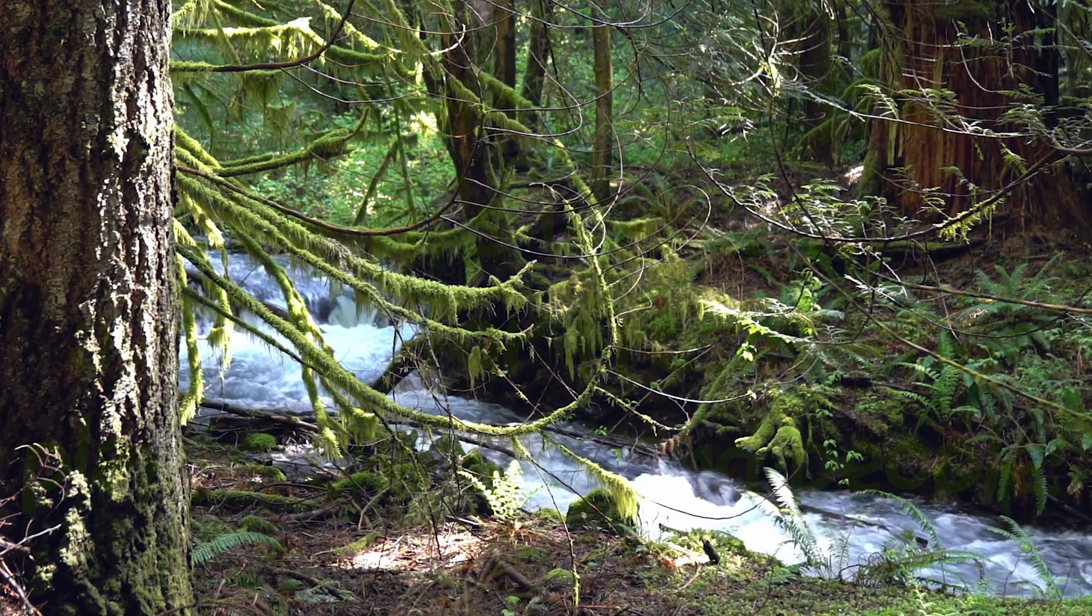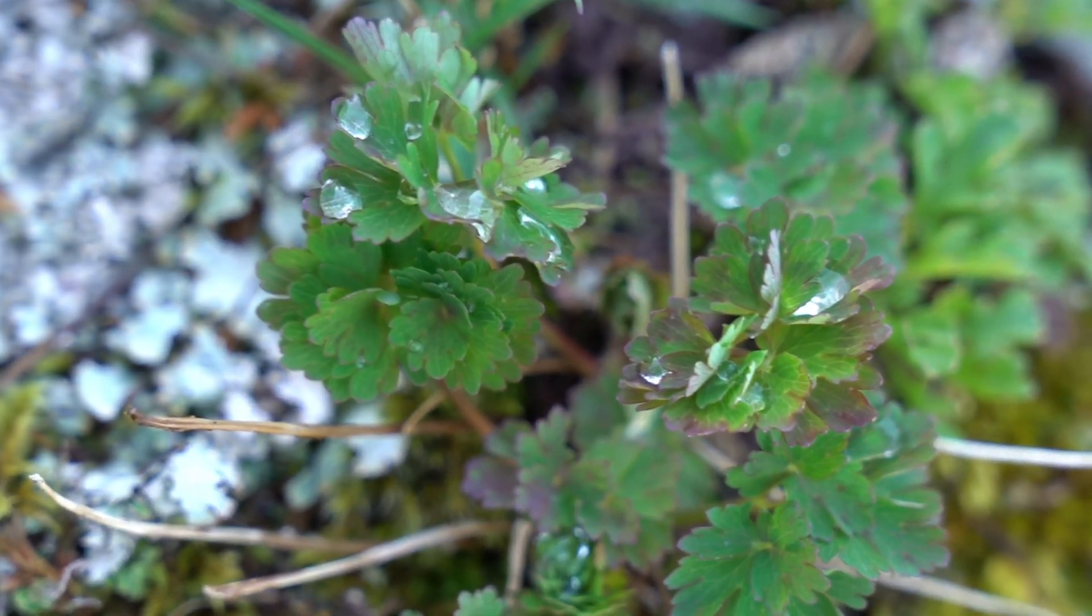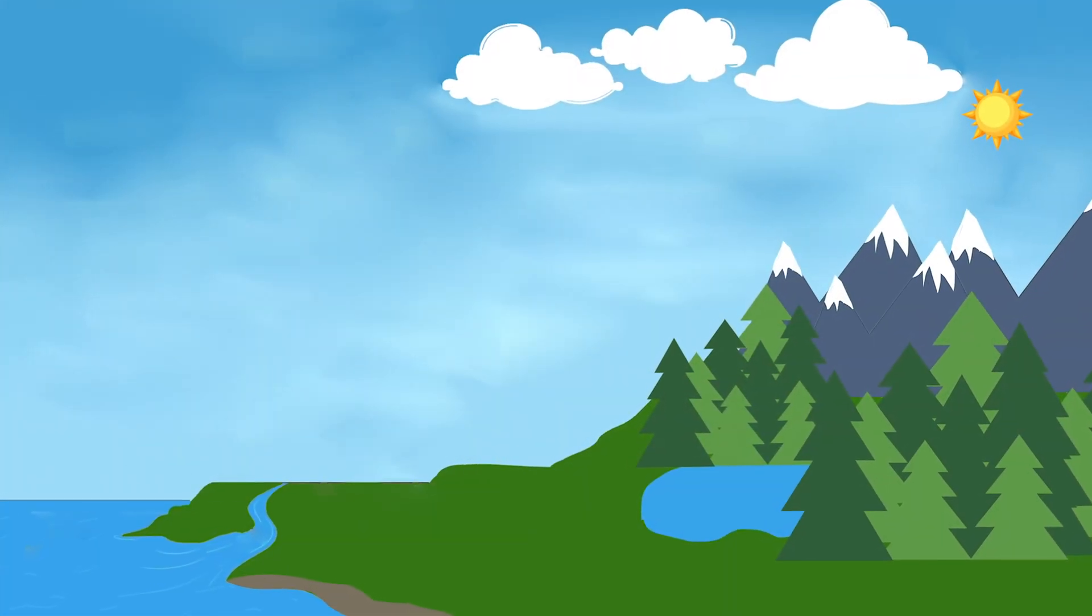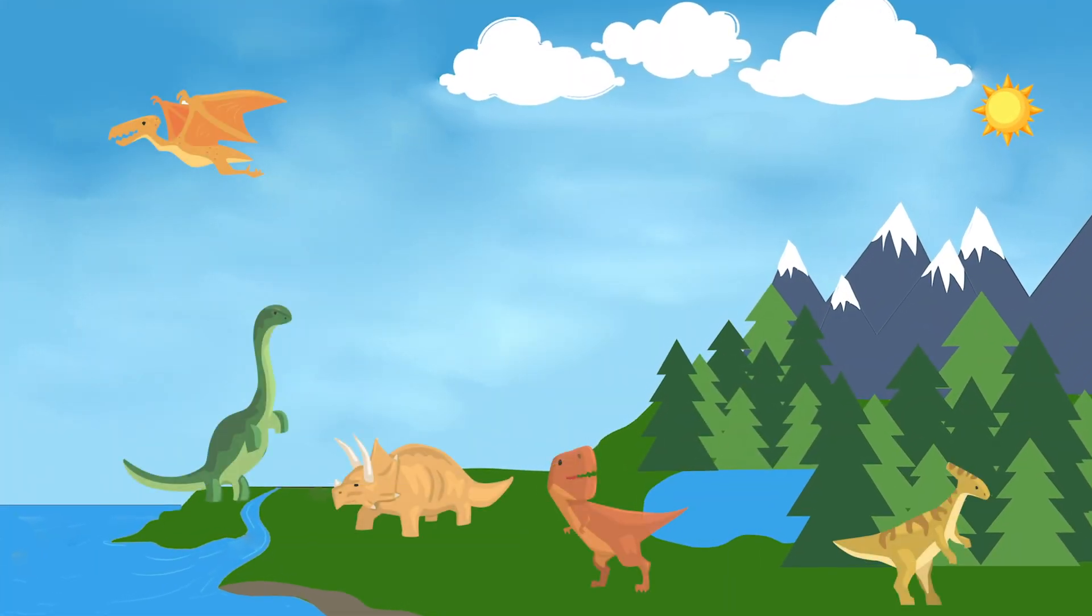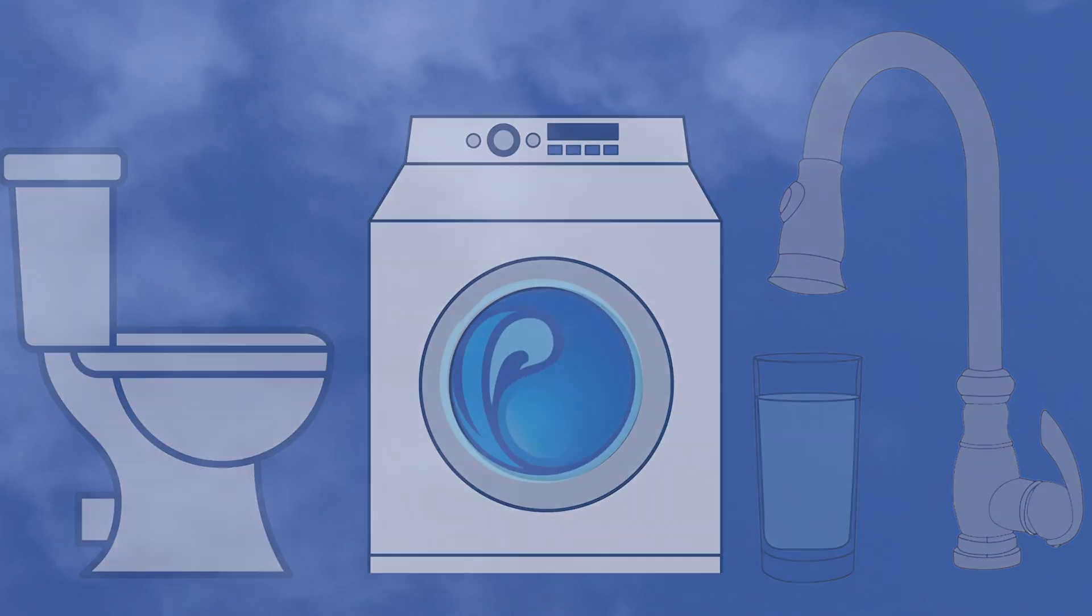To complicate matters, the amount of water on the planet doesn't increase or decrease. It stays the same. The amount of water on the planet is the same as when the dinosaurs roamed the earth. If there is such a small amount of fresh water available for living creatures, and humans use a lot of water, how do we have a continuous source of clean and reliable water?